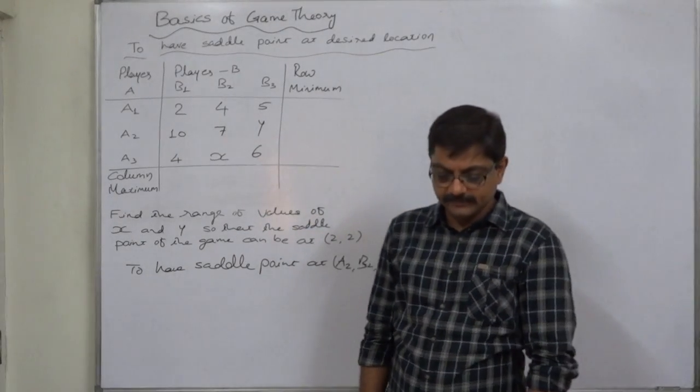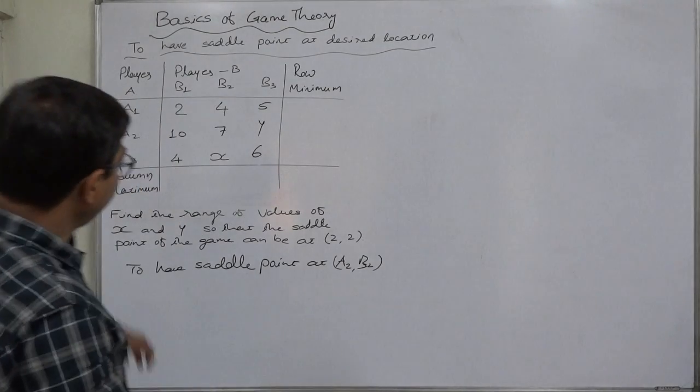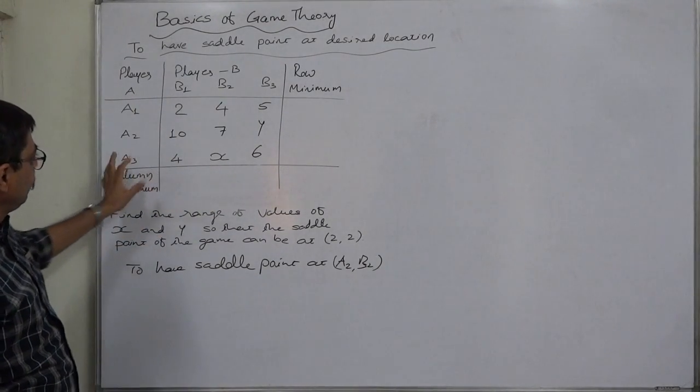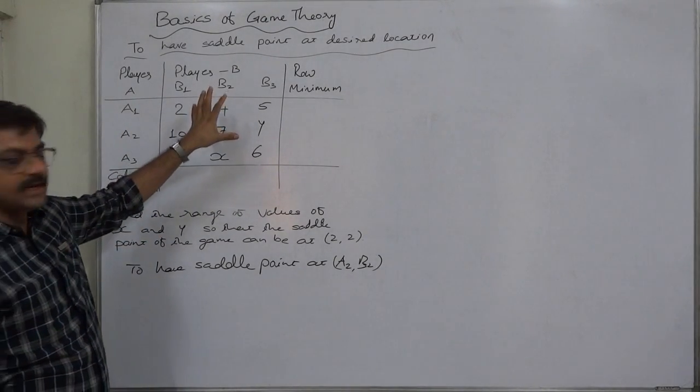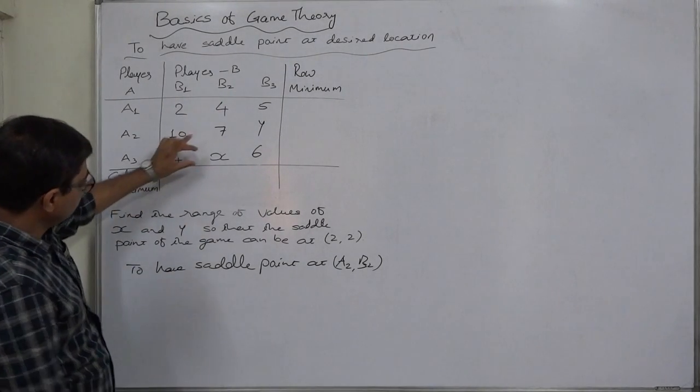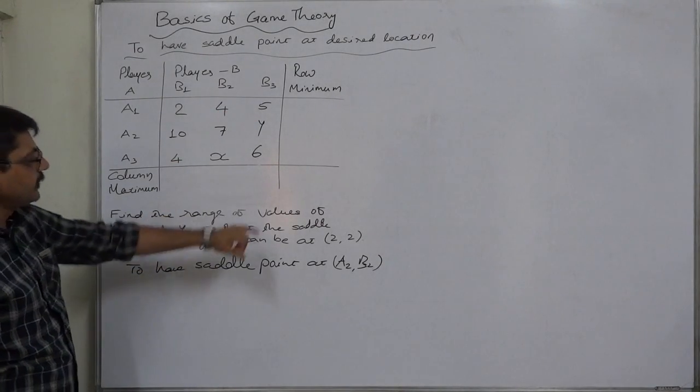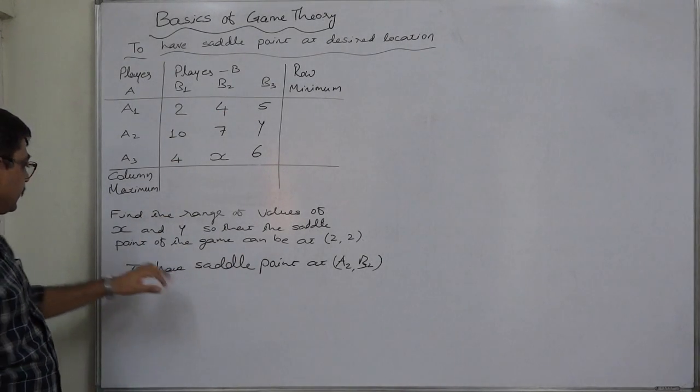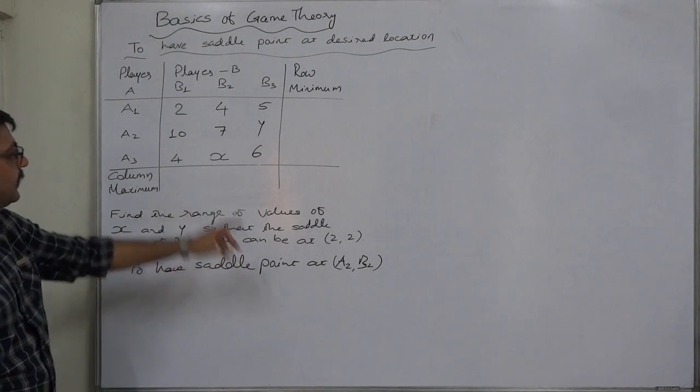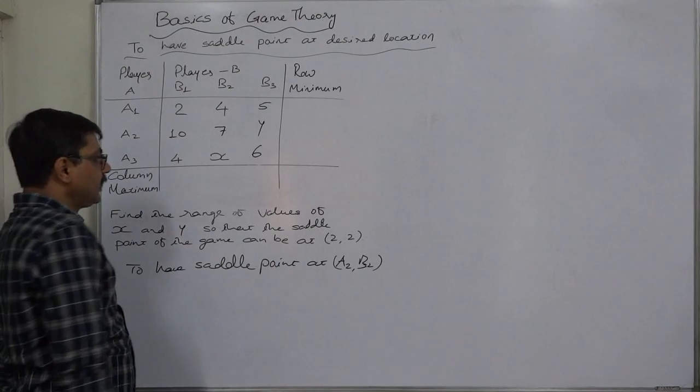Hello friends, welcome again. Let us take a special case. In this case, we have a game with two players, A and B. A has three strategies to select and B has also three strategies to select, but here it is x and it is y. The question is find out the range of values of x and y so that the saddle point of the game can be at point two two, at the place of this seven.